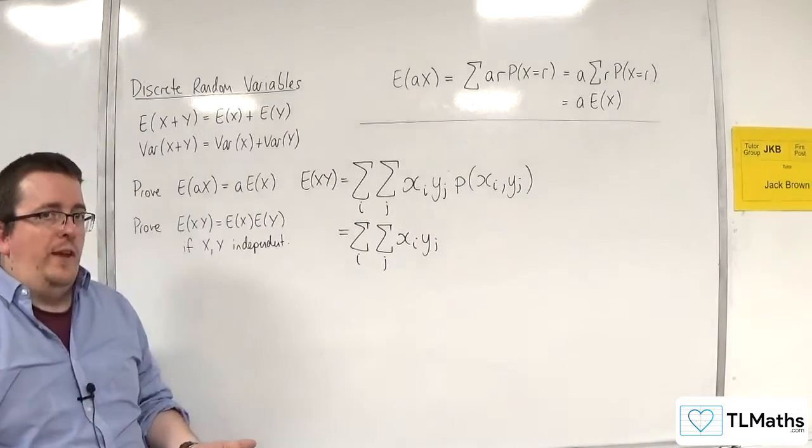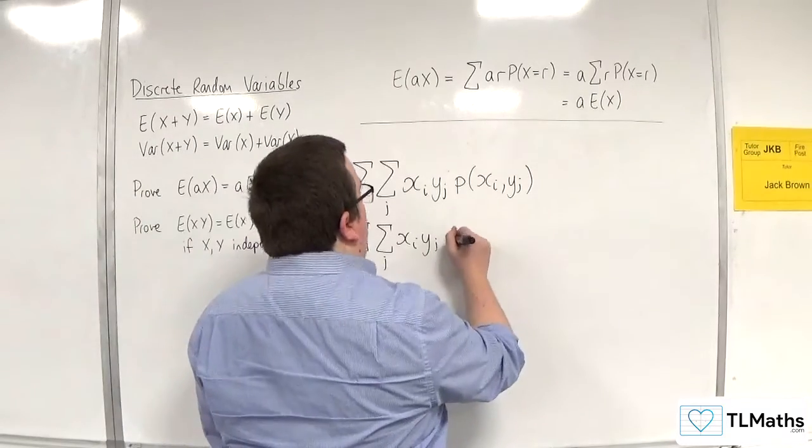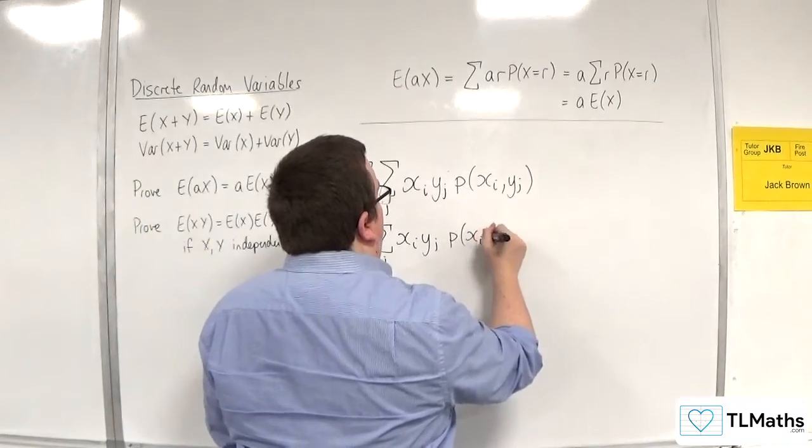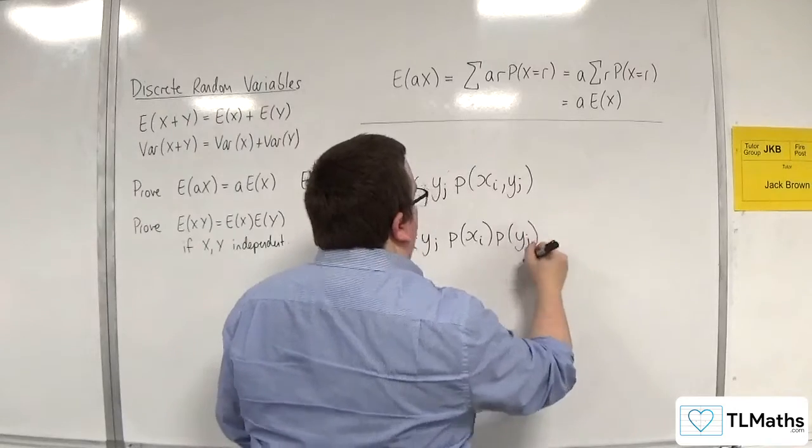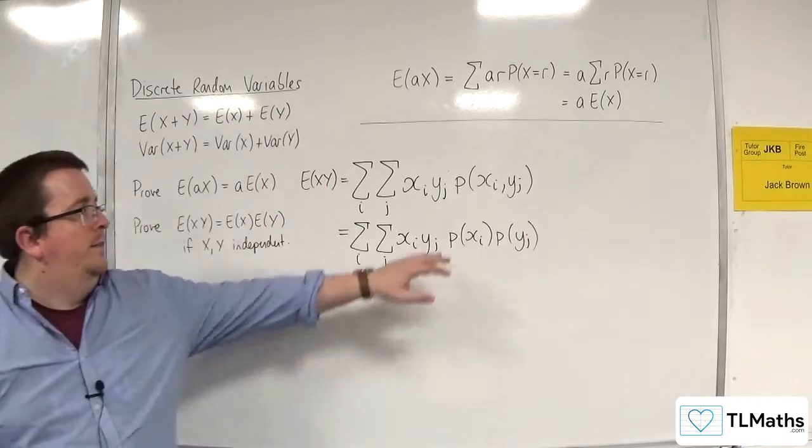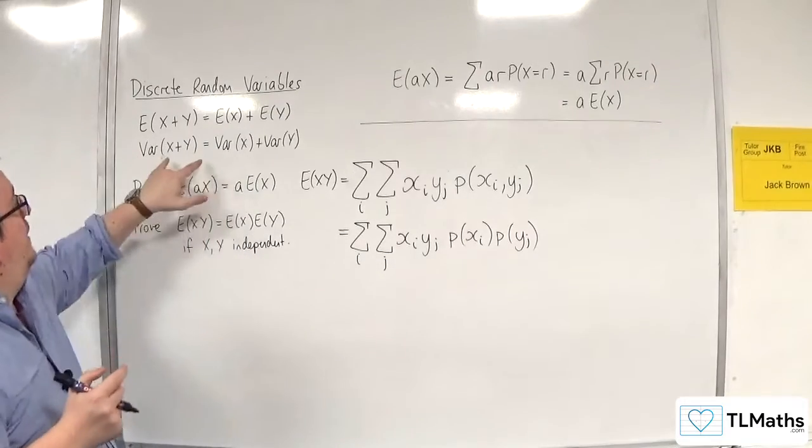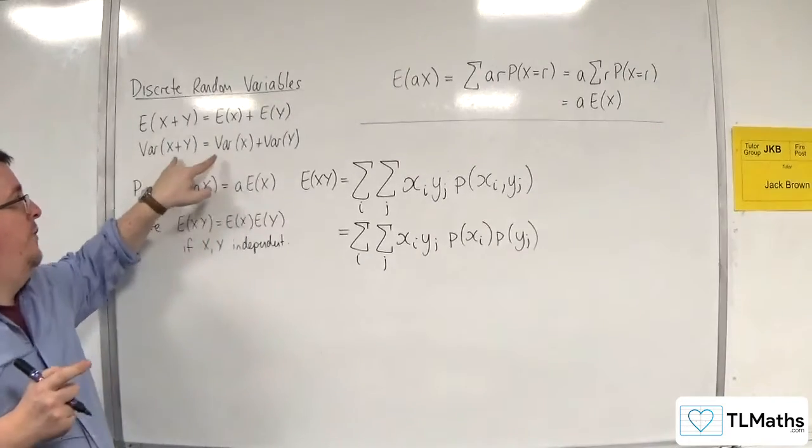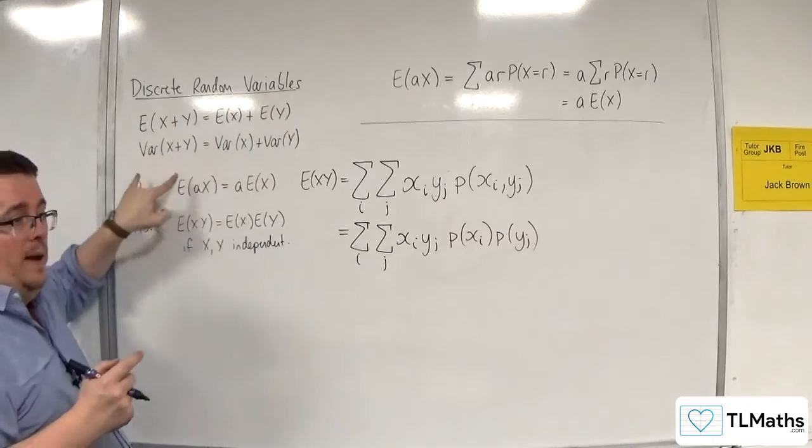If you want the probability of xi and yj happening, that's their intersection. And if they are independent, then that is the same as multiplying the probability of xi by the probability of yj. That is the independence then coming in. And hence, that statement is only true when X and Y are independent.